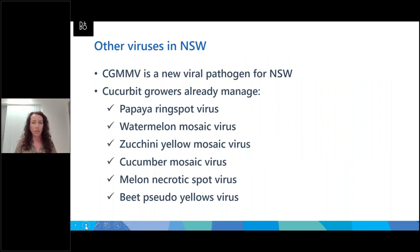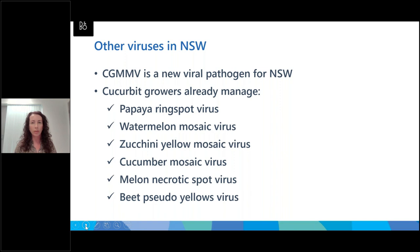CGMMV is a newly detected viral pathogen for New South Wales. However, growers are already facing virus management issues within their cropping cycles. Two of the most common viruses we come across are papaya ring spot virus and watermelon mosaic virus — members of the potyvirus family, very widespread throughout the production regions of NSW. There used to be quite a bit of zucchini yellow mosaic virus in NSW as well, but we haven't been picking this up in recent surveys. We also have fairly widespread infections of cucumber mosaic virus, which has a very large host range. We occasionally pick up periodic detections of melon necrotic spot virus and beet pseudos yellow virus, but these are usually less of an issue.